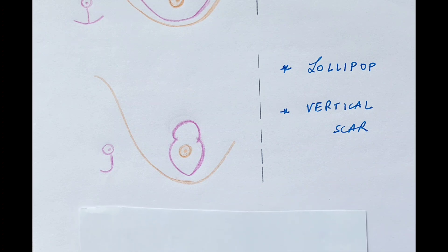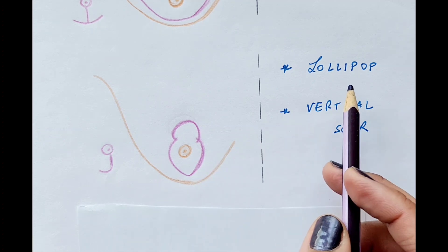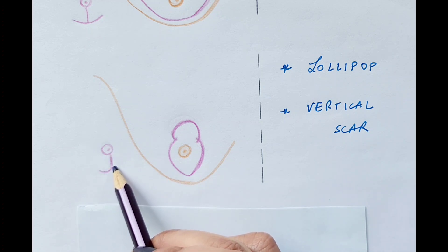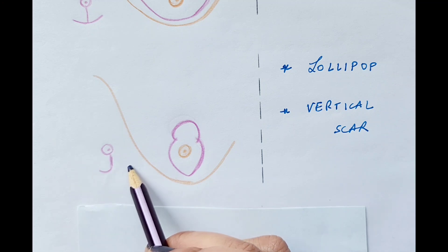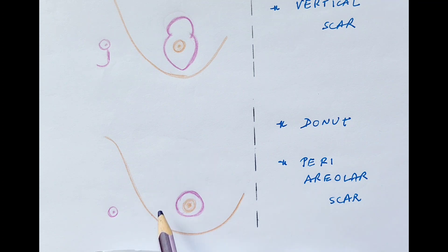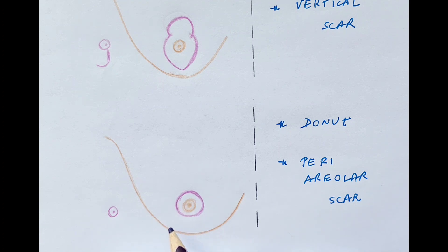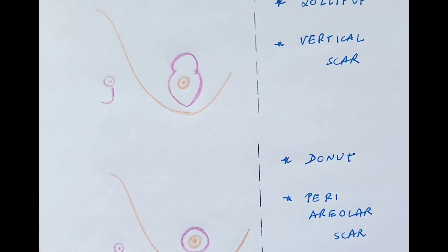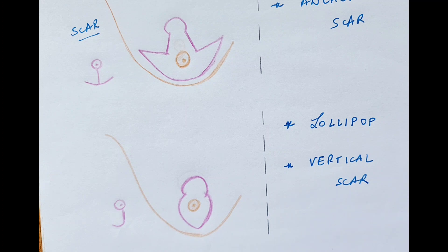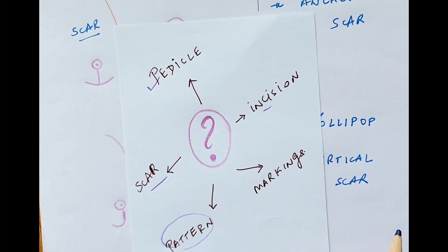The vertical scar technique uses two dome-like patterns around the NAC and is also known as the lollipop technique. The final scar is in the form of a vertical scar or J-shape, with no scar in the region of the IMF — which is an advantage of this technique. The donut or periareolar technique involves an incision only around the NAC region with no vertical or horizontal limbs extending to the IMF, giving a periareolar scar. Any of these incisions can be used depending on the size and shape of the breast and the type of reduction, and these patterns are combined with the different pedicle types accordingly.